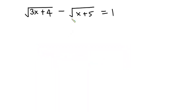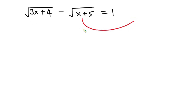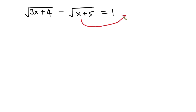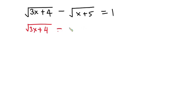First of all, I'm going to move this 1 to the other side. The reason is that if I move this 1 to this side, the values I'll be dealing with will be pretty much smaller compared to squaring each side straight away. Also, if you're not using a calculator, it is advisable to do this. So we have: square root of 3x plus 4 is equal to 1 plus the square root of x plus 5.